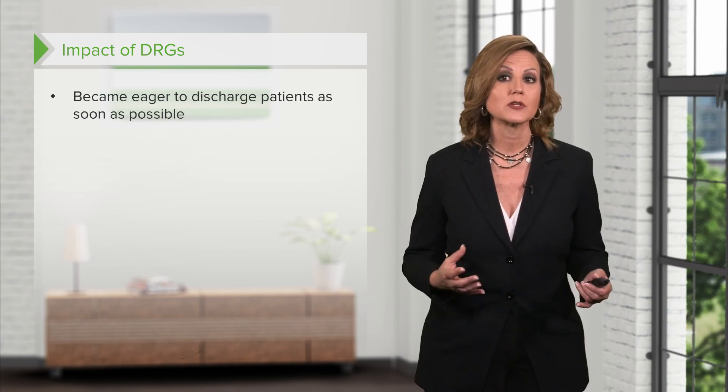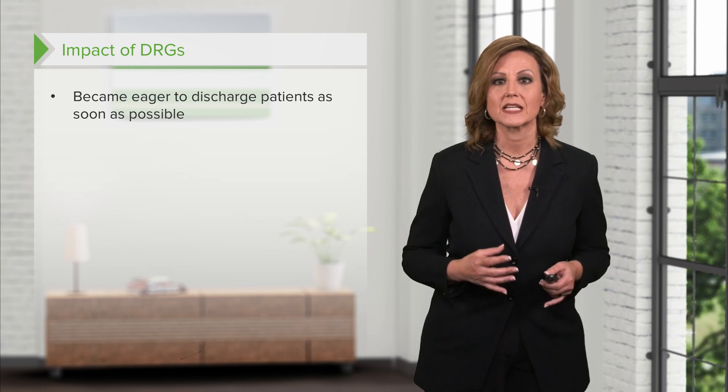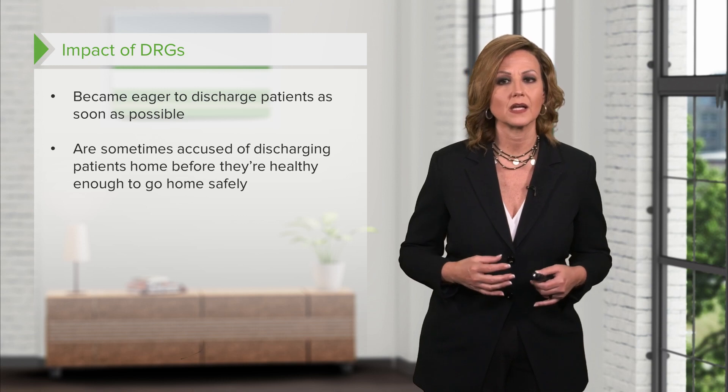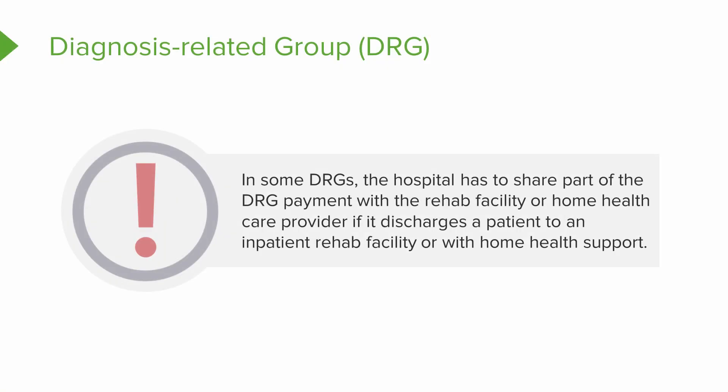However, hospitals became eager to discharge patients as soon as possible and are sometimes accused of discharging patients home before they're healthy enough to go home safely. To discourage early discharge, Medicare has rules in place that penalize a hospital if a patient is readmitted with the same diagnosis within 30 days. In some DRGs, the hospital has to share part of the DRG payment with the rehab facility or the home health care provider if it discharges a patient to an inpatient rehab facility or to home health support.